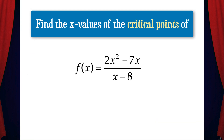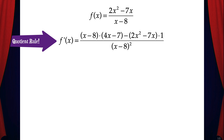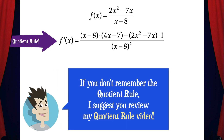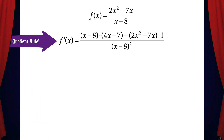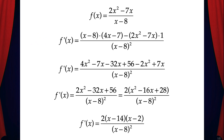Let's do one more example. Find the x-values of the critical points of f(x) = (2x² - 7x) / (x - 8). In order to find the critical points, we need to determine where the derivative is zero or does not exist. To take the derivative here we need to use the quotient rule — if you don't remember it, I suggest you review my quotient rule video. After some algebra and factoring, we get a cleaned-up version: f'(x) = 2(x - 14)(x - 2) / (x - 8)².